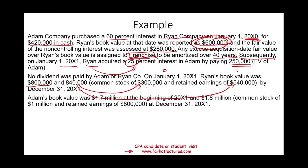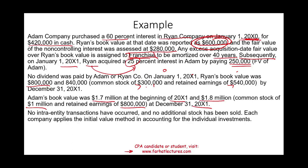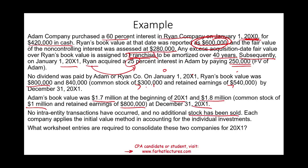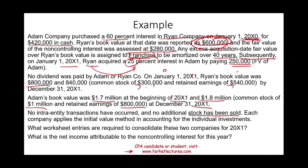Adam's book value was $1,700,000 at the beginning of 20X1 and $1,800,000 at the end of the year, representing $1,000,000 in common stock and $800,000 in retained earnings. There were no inter-entity transactions and no additional stock was issued. Each company applies the initial value method. We need to prepare the working paper entries to consolidate the two companies for 20X1 and determine the net income attributable to the non-controlling interest.